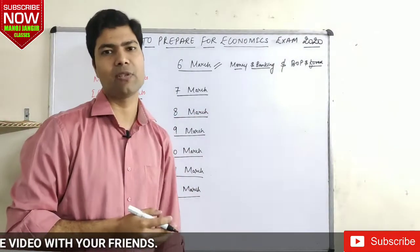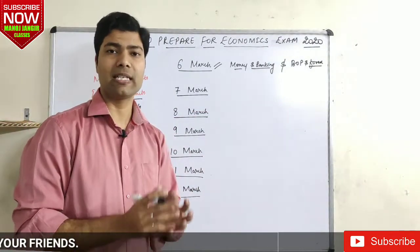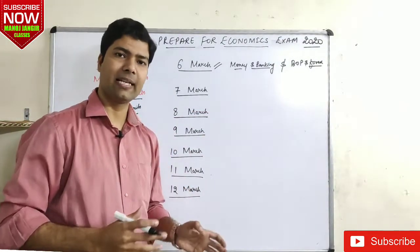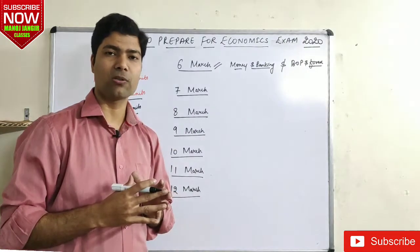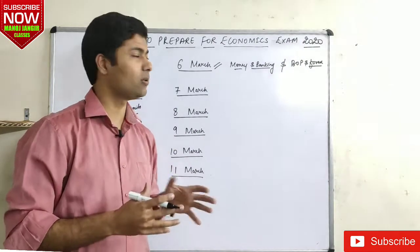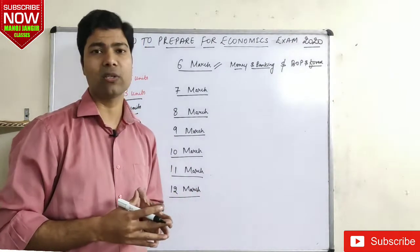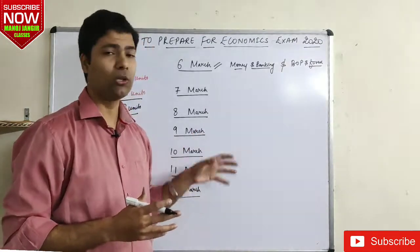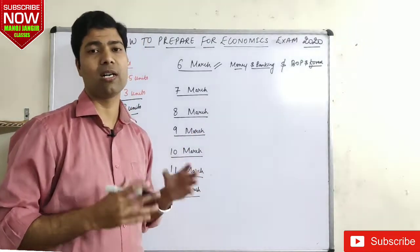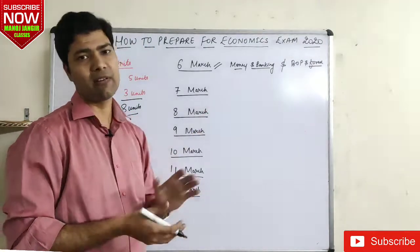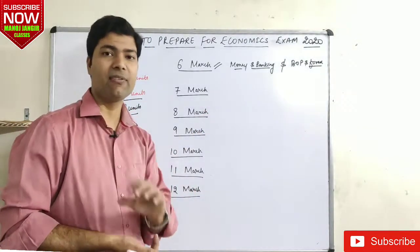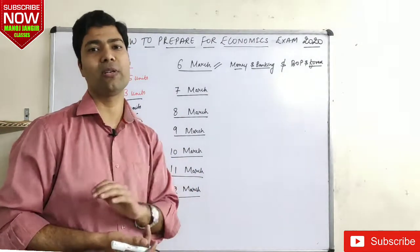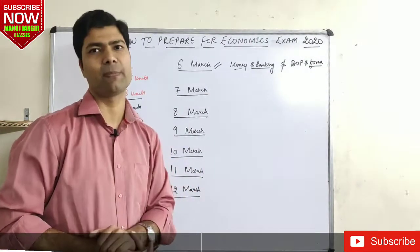BOP and Forex — these units are very easy. If you have an exam coming up, you might want to relax, but I will say that if you are a little active, these two units are very easy to cover. You'll have covered almost two out of five macroeconomics units.